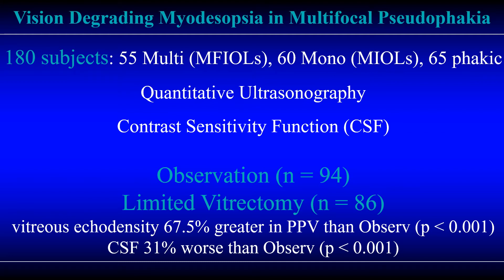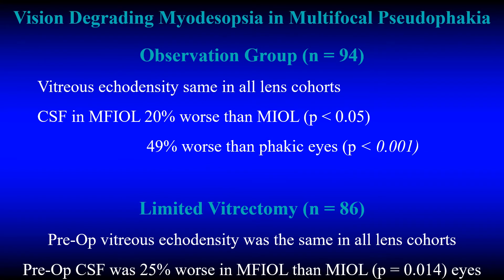Similarly, contrast sensitivity function was 31 percent worse in the group that chose vitrectomy as compared to the observation group. Within the observation group, vitreous ecodensity was the same in all lens cohorts, yet contrast sensitivity function was 20 percent worse in the group with multifocal IOLs as compared to the group with monofocal IOLs, and 49 percent worse as compared to phacic eyes. Within the group who chose limited vitrectomy, preoperative vitreous ecodensity was the same in all lens cohorts, yet preoperative contrast sensitivity function was 25 percent worse in the multifocal group as compared to the group that had monofocal intraocular lenses.